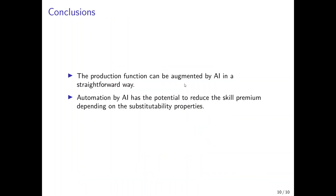We can conclude that we have a straightforward production function that can be augmented by artificial intelligence, providing a clear way to model AI and automation in such an economy. Automation by artificial intelligence has the potential to reduce the skill premium, depending on the substitutability properties in the production function. Typically, an increase in industrial robots — standard automation — would increase the skill premium.